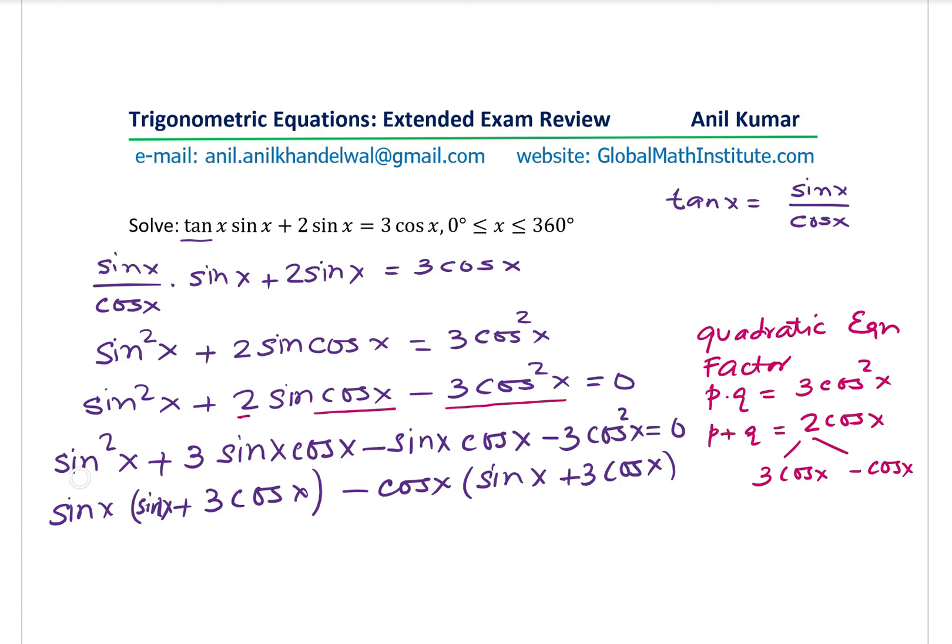Now we have sin x plus 3 cos x common, and here we get sin x minus cos x equals to 0. Perfect. So you get your quadratic equation in the factored form. And that tells you that now we could actually find the solution. And remember, the solution is within the interval 0 to 360 degrees.